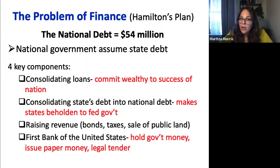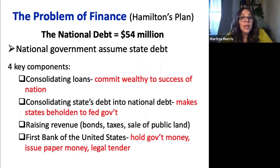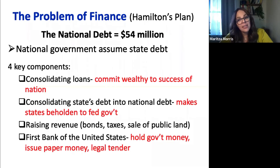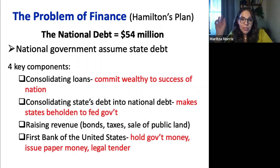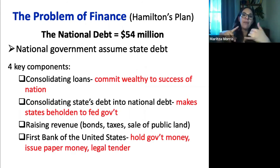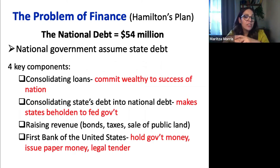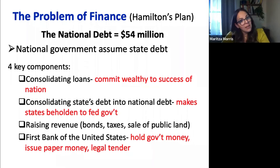The third component of Hamilton's financial plan is to raise revenue through taxes, sale of public land, and selling bonds. The fourth and most important element is to establish a First National Bank — a place to hold the government's money, issue paper money and legal tender. There's going to be opposition because some states, like Virginia, had already paid off all their debt and weren't willing to compromise on having the national government assume state debts.